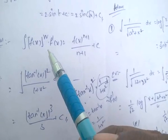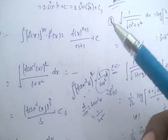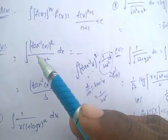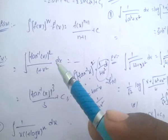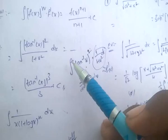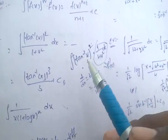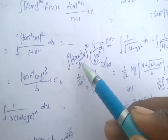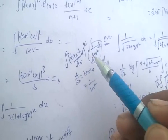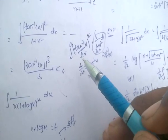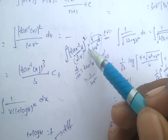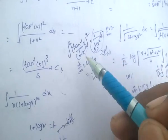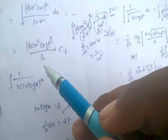The important formula: integral of [f(x)]^n · f'(x) dx equals [f(x)]^(n+1) / (n+1). For example, integral of (tan⁻¹x)² / (1+x²) dx: here f(x) is tan⁻¹x and f'(x) is 1/(1+x²). So it is in the form [f(x)]^n · f'(x), giving (tan⁻¹x)^(2+1) / (2+1) equals (tan⁻¹x)³ / 3 plus c.